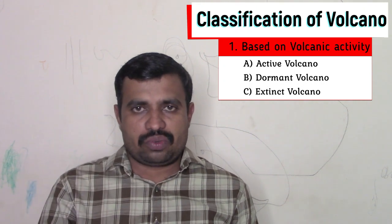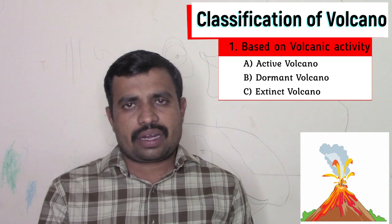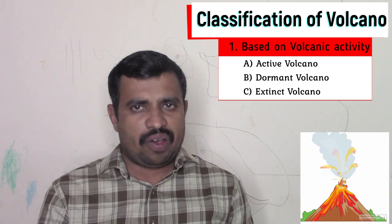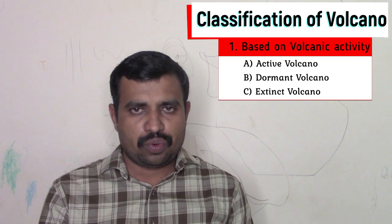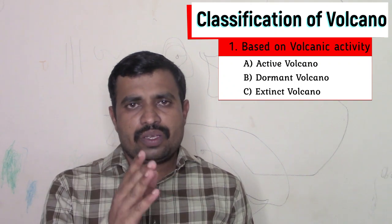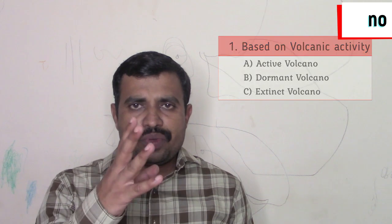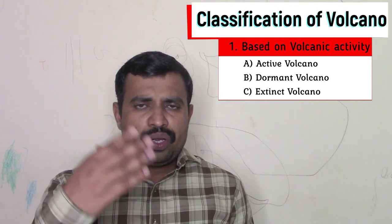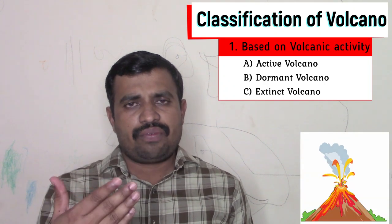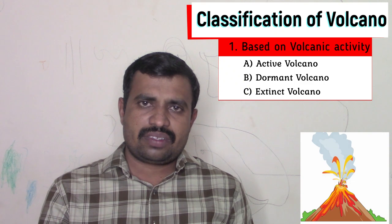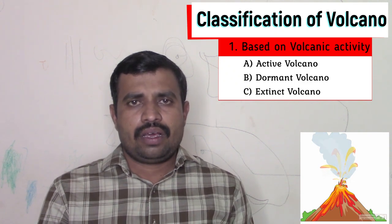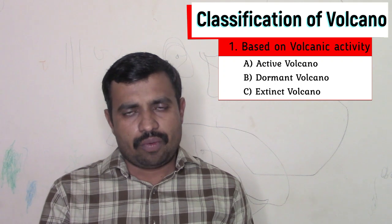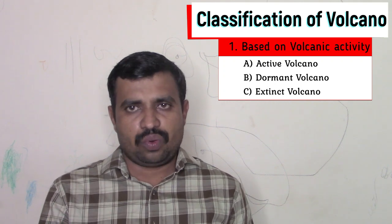The third type is the extinct volcano. As the name suggests, these volcanoes are quiet now. Though they exploded in the past, there is no hope of explosion in the future or present. Differentiating dormant and extinct volcanoes is very difficult. Many volcanoes are now extinct because a lot of weathering and erosion takes place on the earth's surface, and many craters are buried under water or sediments, so their appearance is extinct now.